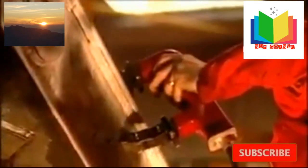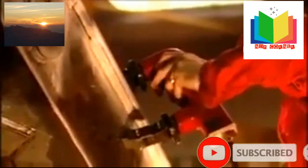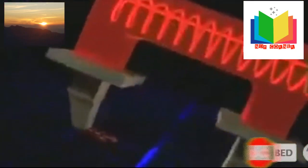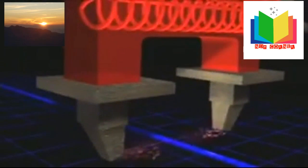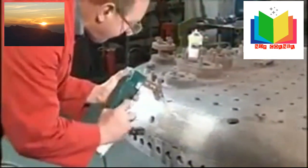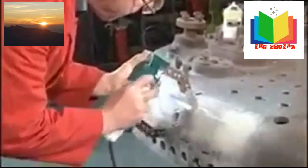Let's start with magnetic particle inspection. We use MPI to find surface and just beneath the surface discontinuities in ferromagnetic materials. We do it by introducing a magnetic flux into the material. Ink containing extremely fine ferrous particles is applied to the surface while a magnetizing field is applied.